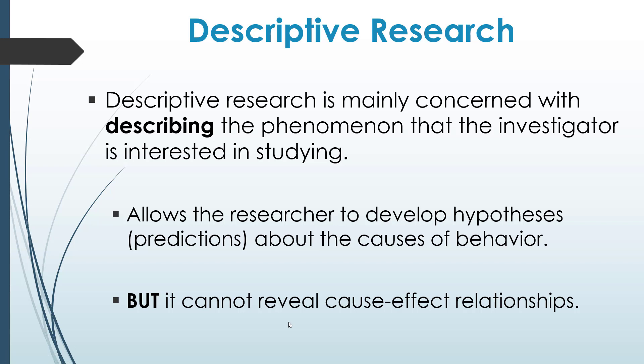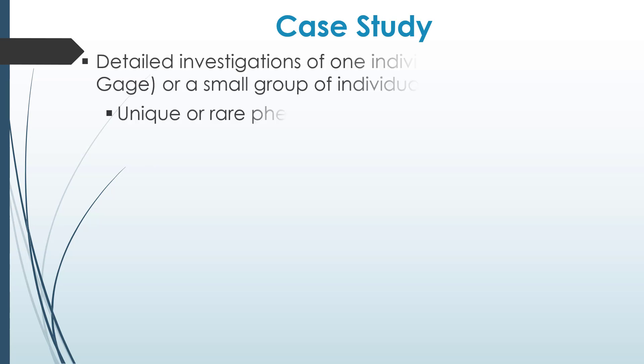The only research method that can actually reveal cause-effect relationships is the experimental research design, and we're not going to discuss that one in this video because it is not descriptive. The first descriptive research method is the case study — a detailed investigation of usually one individual, such as the Phineas Gage case, or it can be a small group of individuals.